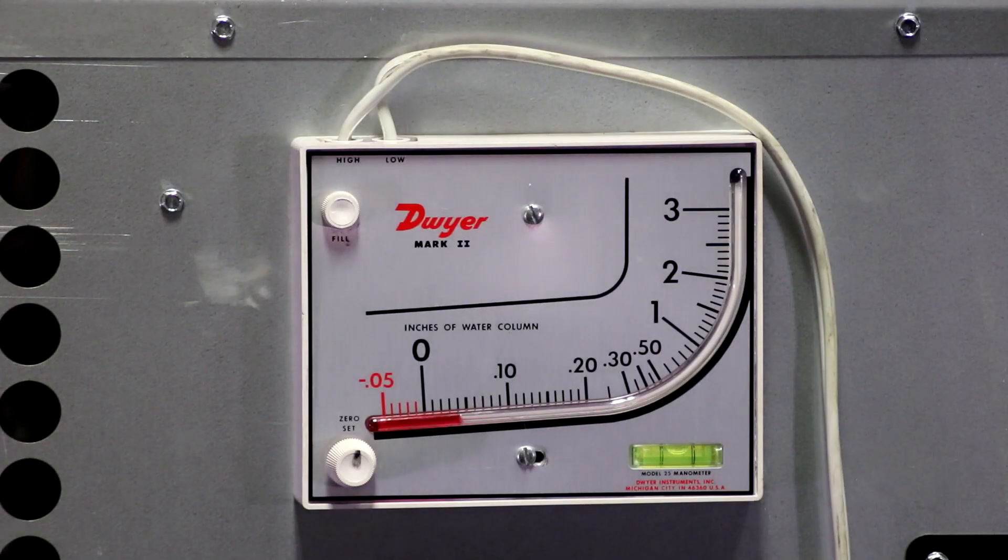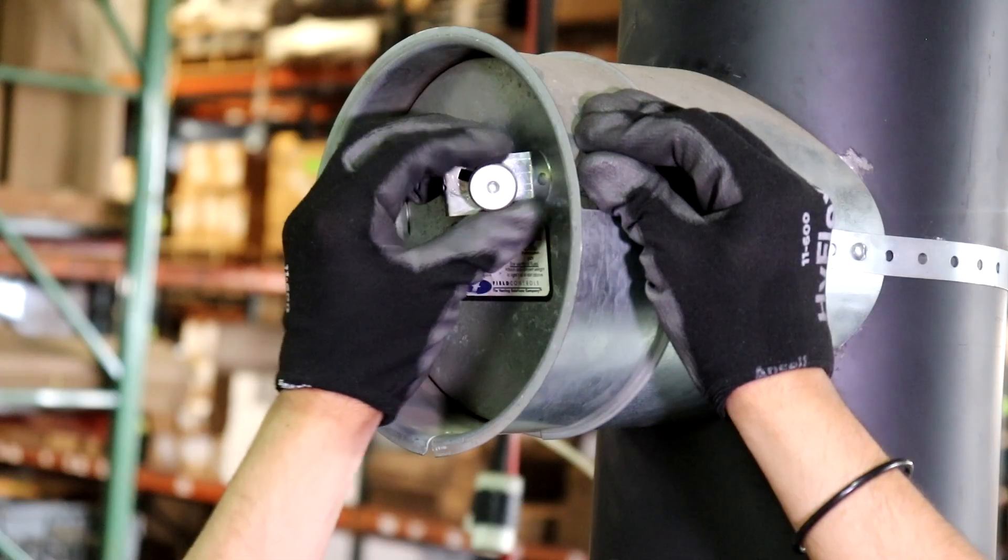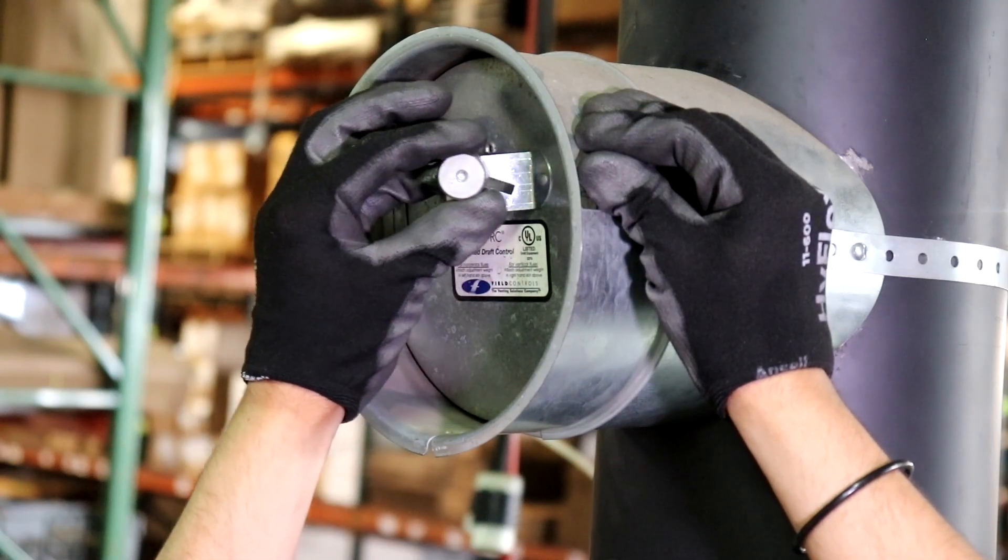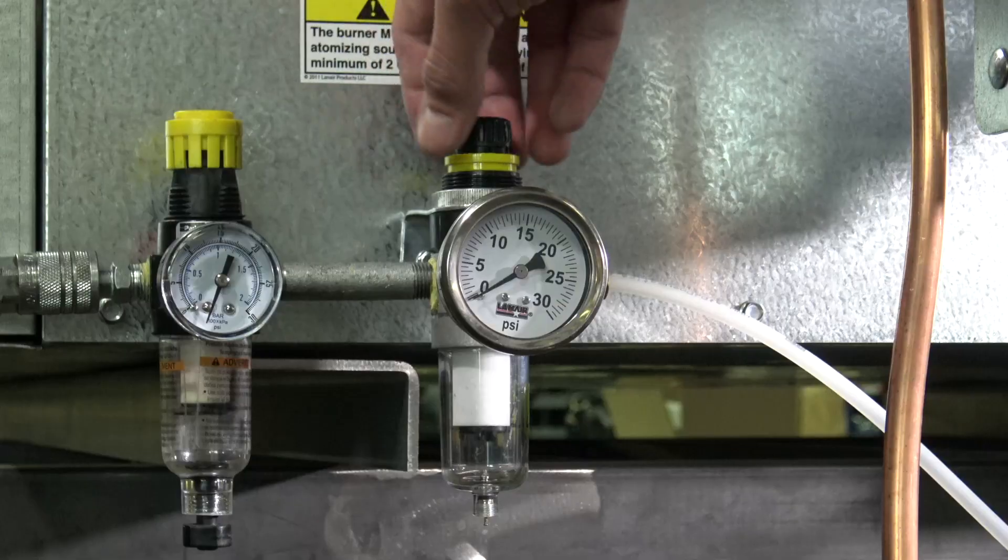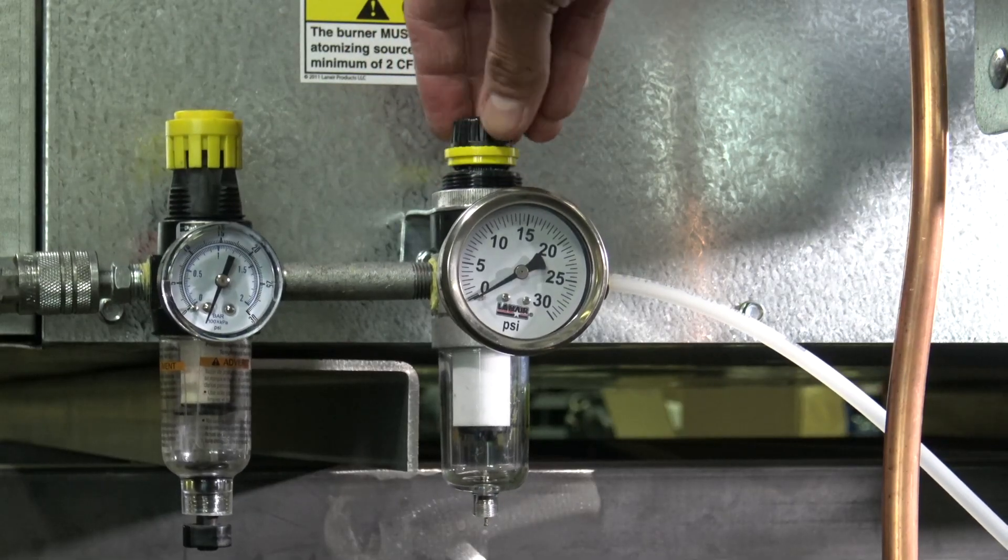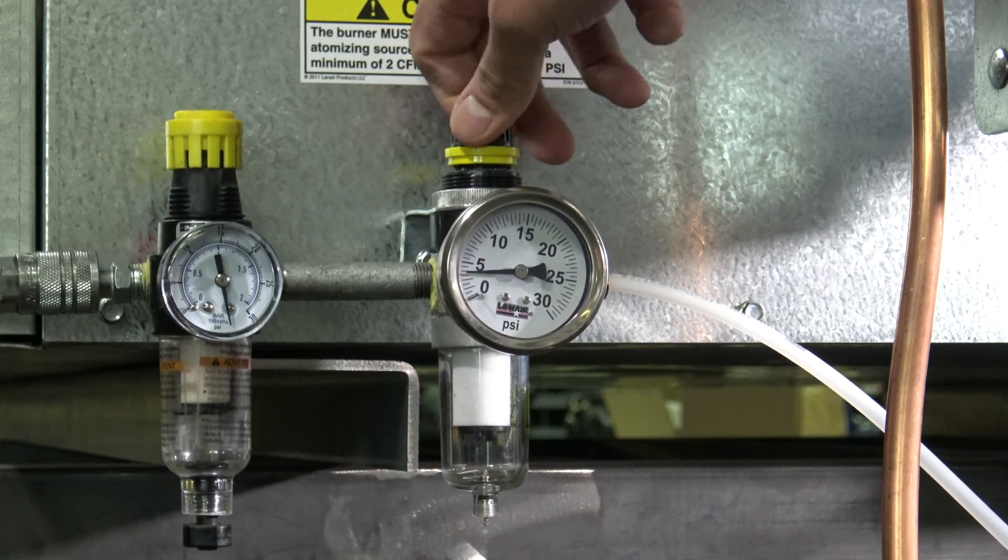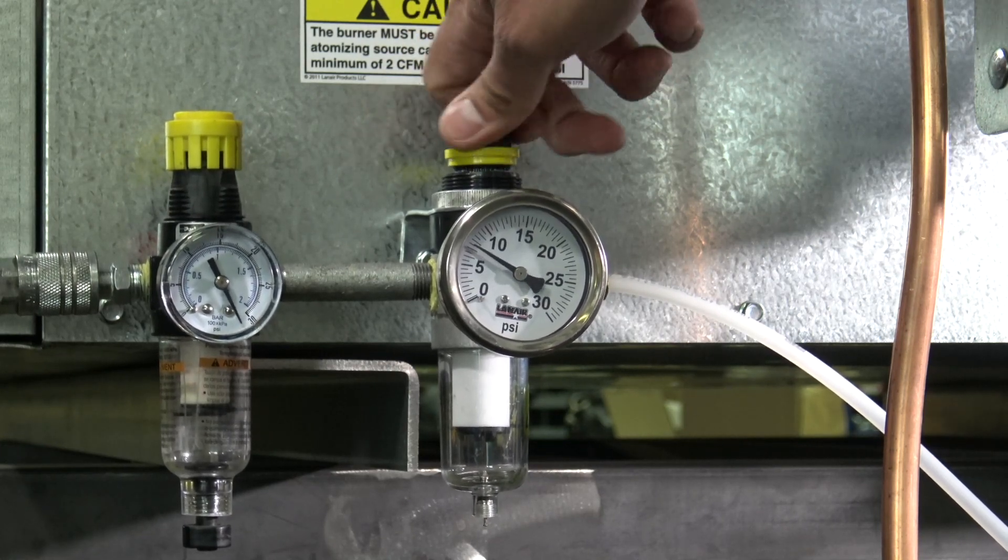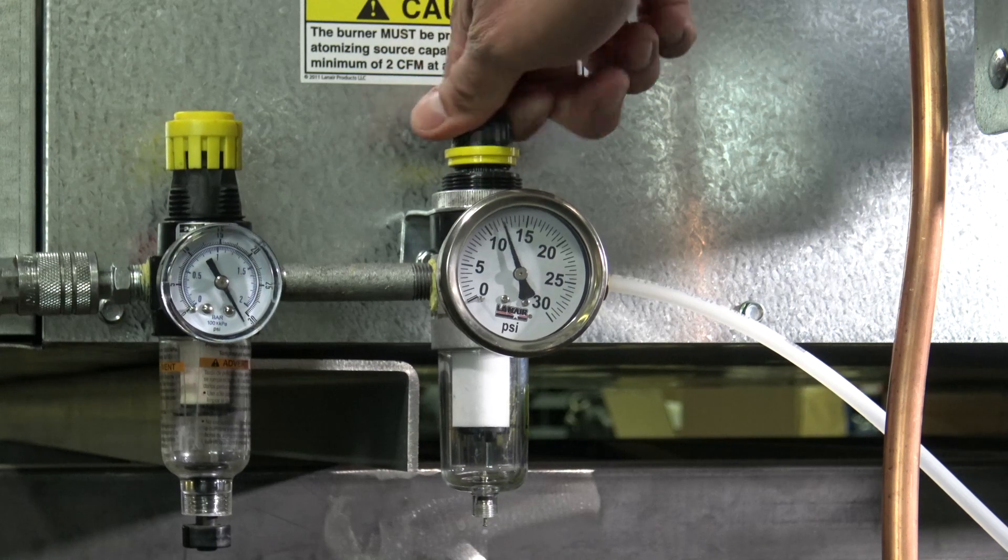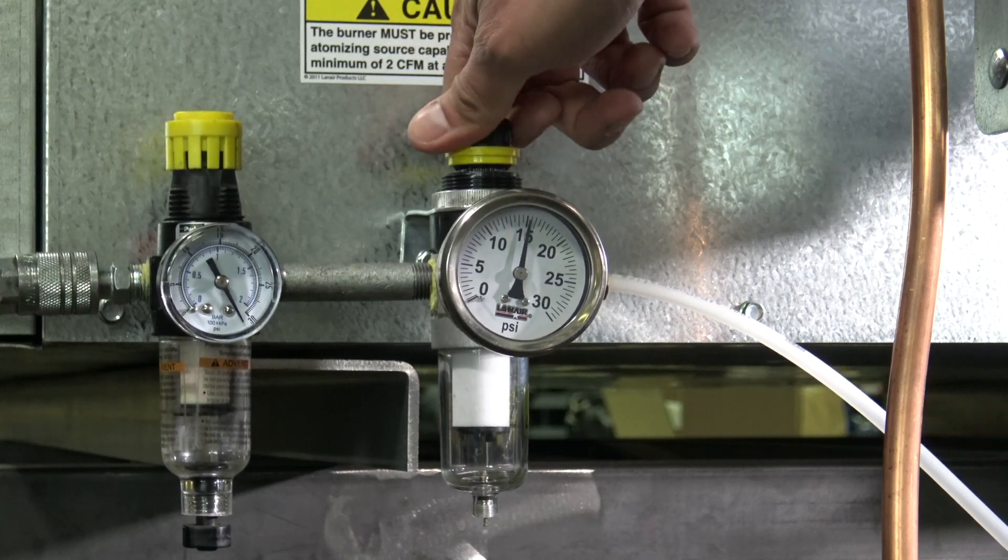When the unit has reached operating temperature, check the chimney draft to ensure that it is correct according to the product instruction manual. If necessary, use a gloved hand to adjust the damper door in order to achieve proper draft. Ensure that the primary air pressure regulator is supplying 30 psi to the secondary air pressure regulator, and that the secondary air pressure regulator is supplying the appropriate initial air pressure setting to the unit, based on the product instruction manual's recommendation for your model.